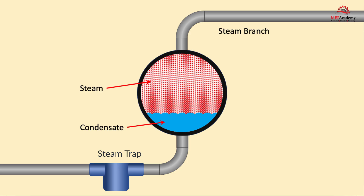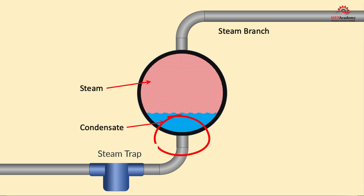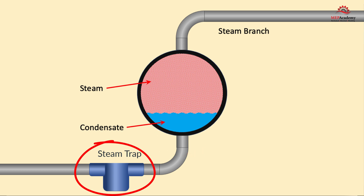It's important that any steam branch line be taken off the top of the main steam pipe in order to prevent pulling condensate into the branch. As you can see, steam will rise to the top because of its lighter density and higher temperature. For similar reasons, you want to make any condensate branch connections off the bottom of any steam line or system to ensure that you are only pulling condensate, and all condensate branches should contain some type of steam trap to ensure that only condensate passes through to the condensate system.